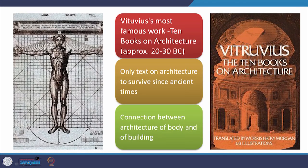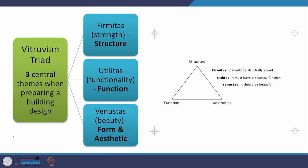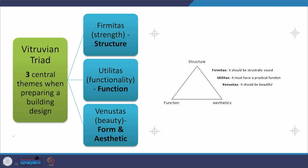One principle that has struck me most is that given by Vitruvius — an architect and theorist of the Roman times who wrote one very important volume called the Ten Books of Architecture. It is the only text on architecture that has survived since ancient times, and it tells us about the connection between the architecture of the body and of the building. The most important component of his writings is what I would call the Vitruvian Triad.